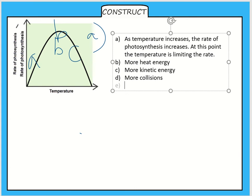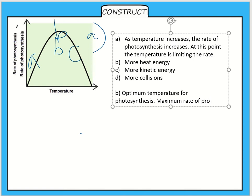At B we have the optimum temperature. I don't have a figure on here and it will be different in different plants depending on their environments but it's probably not going to be above 60 degrees. Optimum temperature for photosynthesis, maximum rate of product formed.